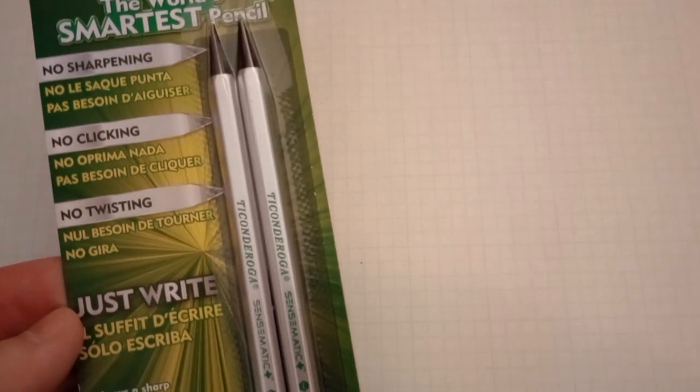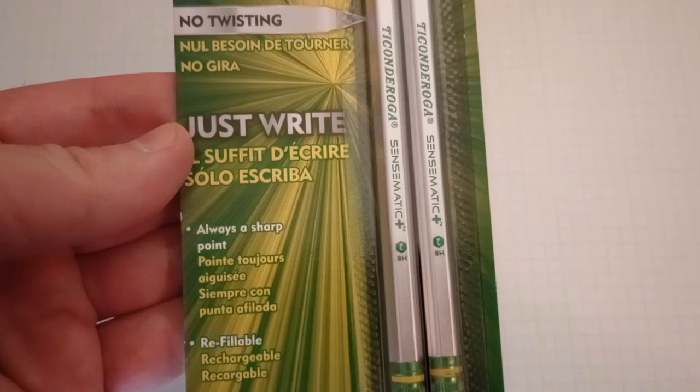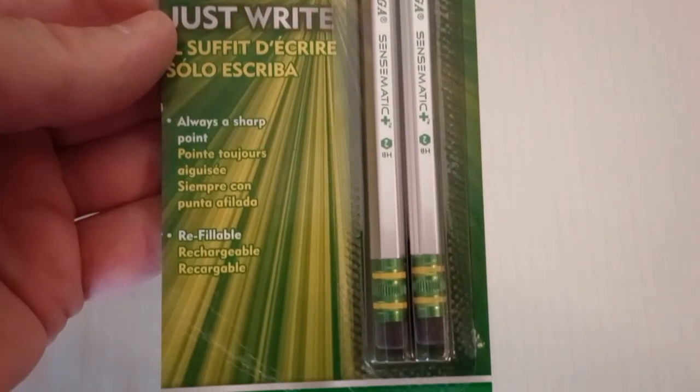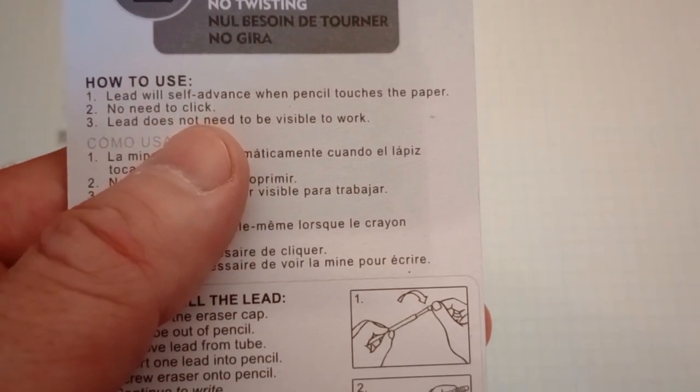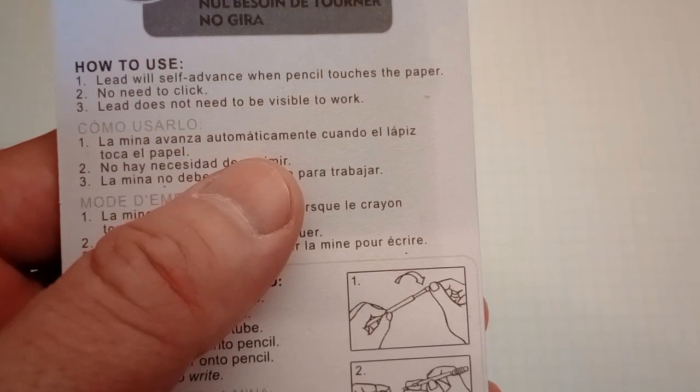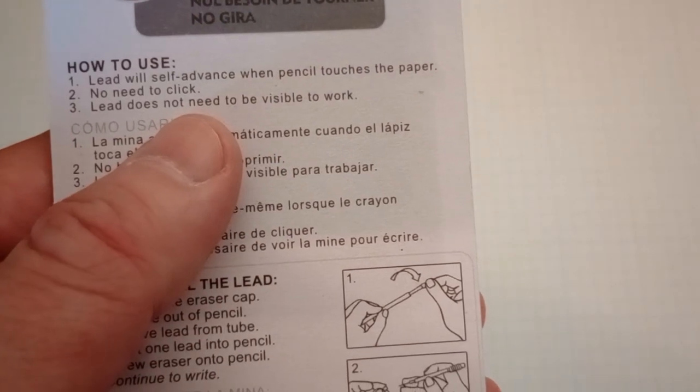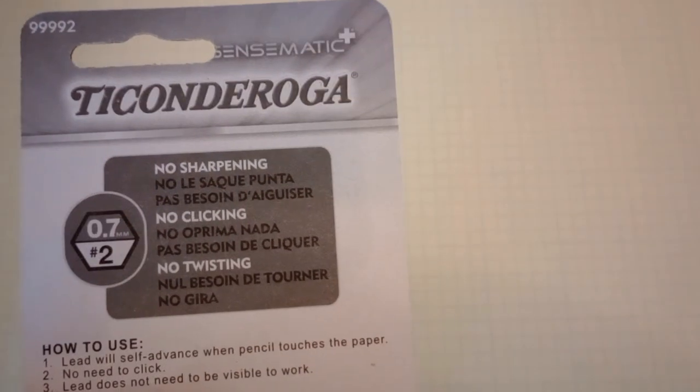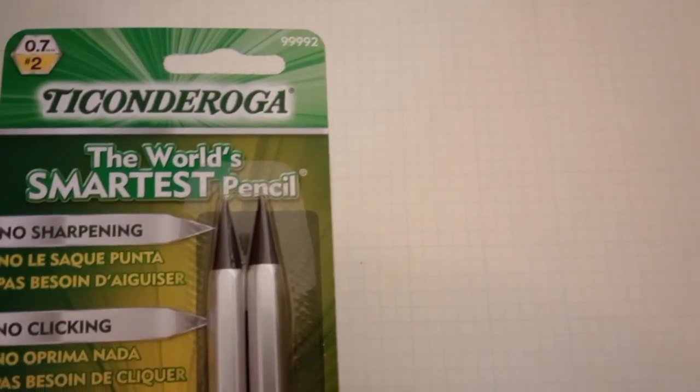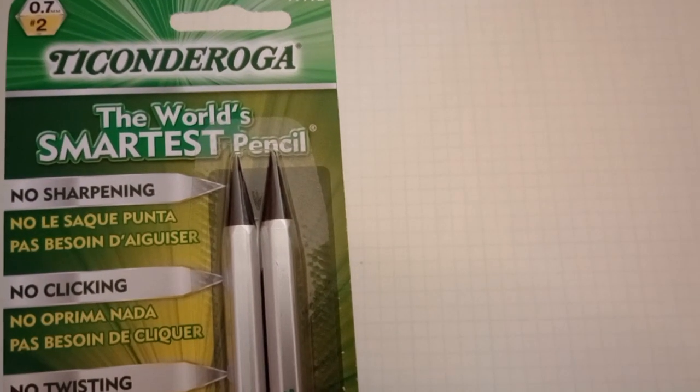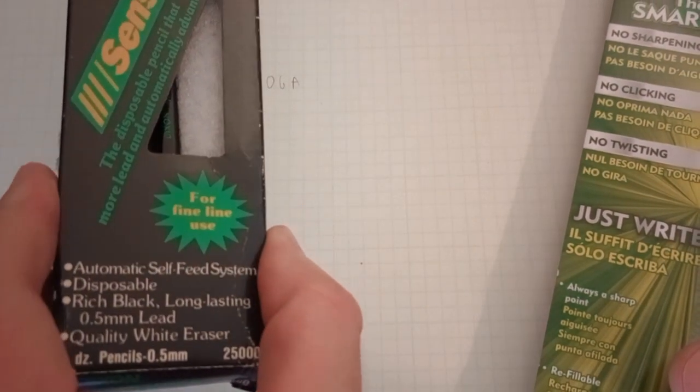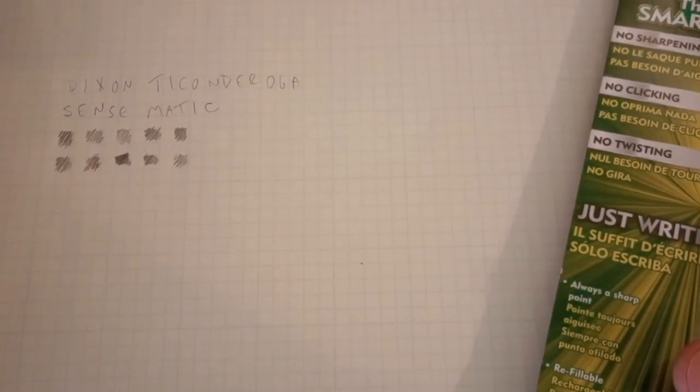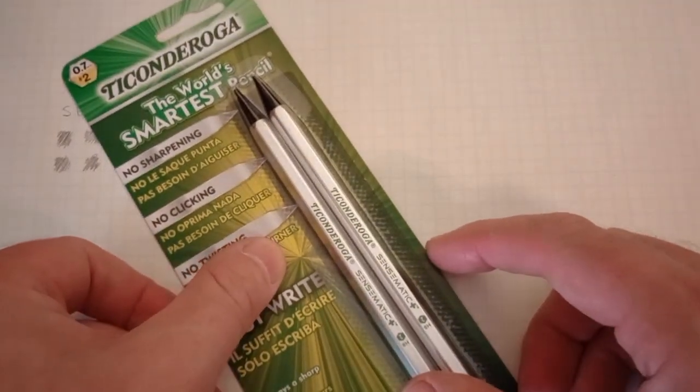No sharpening, no clicking, no twisting. Always a sharp point. Refillable. So that is a change. How to use. Lead will self-advance when pencil touches the paper. No need to click. Lead does not need to be visible to work. This is a 0.7 millimeter. So a little more broad than the, a little thicker lead than the previous iteration of that. And I don't know if the original came in multiple sizes. I tend to doubt it. Probably it was all the same. But let's open this and see how these do.